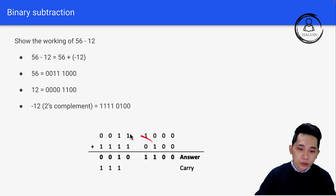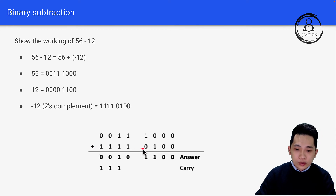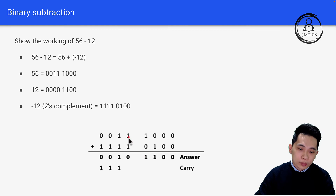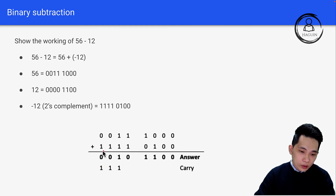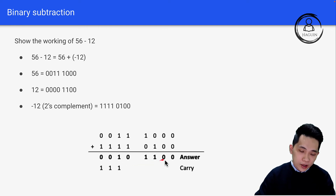We have 00111000 for 56, and 11110100 for negative 12. Working through: 0+0=0, 0+0=0, 0+1=1, 1+0=1, 1+1=0 with carry 1, then 1+1+carry of 1 gives 1 with carry 1, then 1+carry gives 0 with carry, then 1+1+1 gives 0 with a carry — we ignore the final carry. The final answer is 00101110, which is the working of binary subtraction.